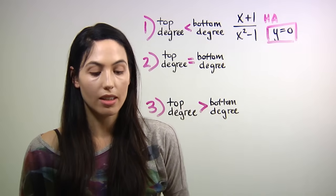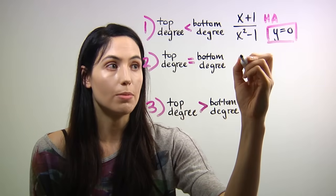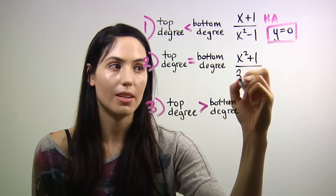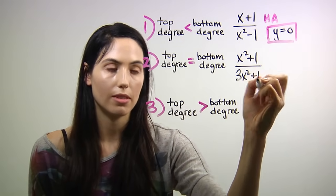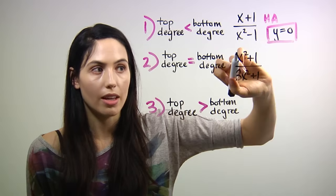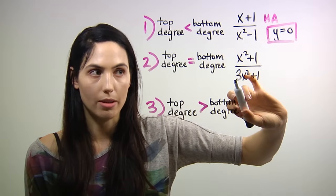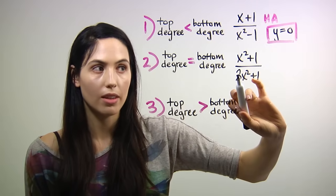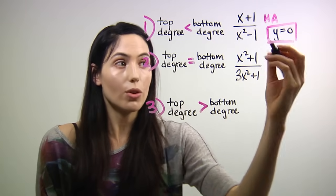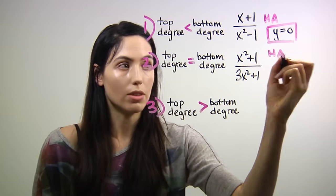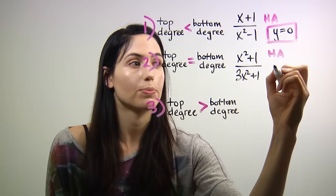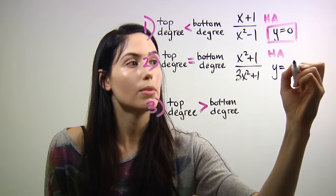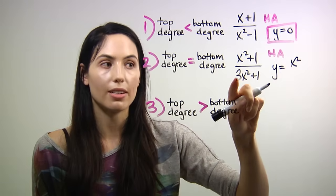Second case, if your degree on top is the same as your degree on the bottom, and in this example, that's x squared on top, x squared on bottom, so the degree is 2 on top and 2 on the bottom, then your horizontal asymptote you will get by dividing the leading term on top by the leading term on bottom.